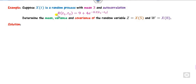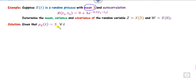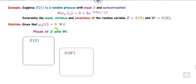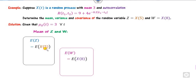Look at the next example. The autocorrelation function is given to you. You have to find the mean, variance, and so on of Z and W. What is given: the mean is 3 and is independent of t, so it is constant. To find the mean of Z: Z = x(t), so E[Z] = E[x(t)] = 3. Similarly, the mean of W is also 3.